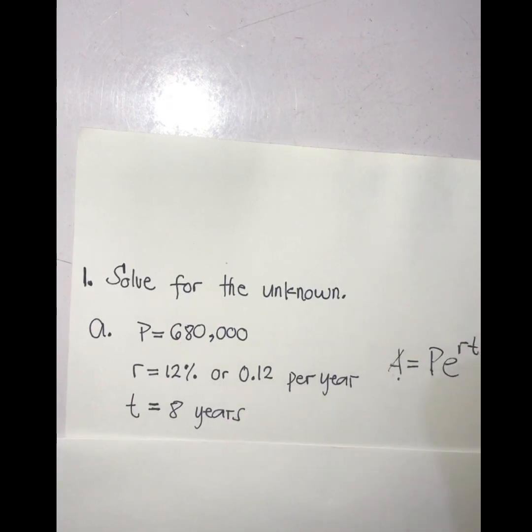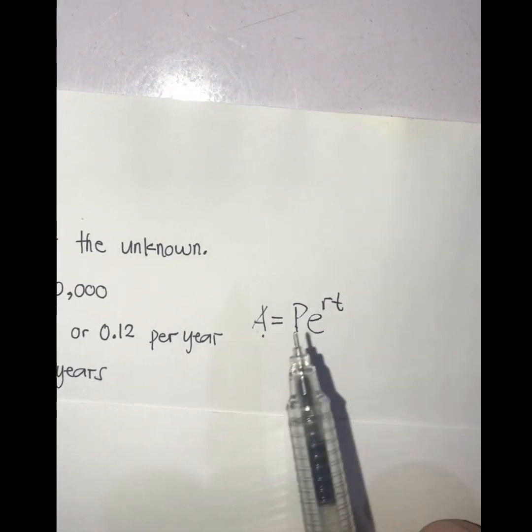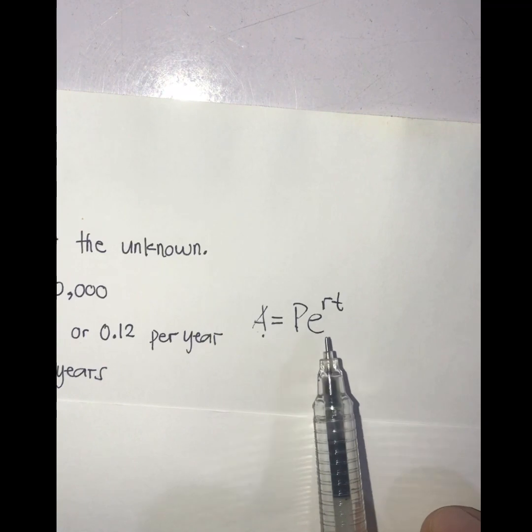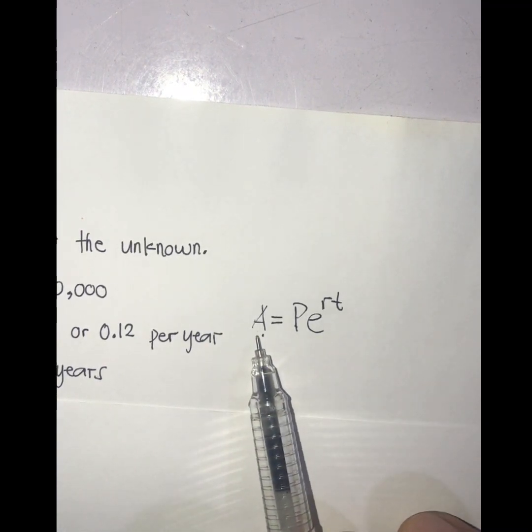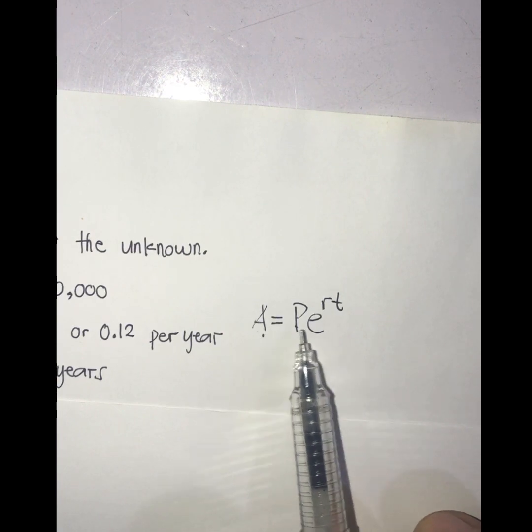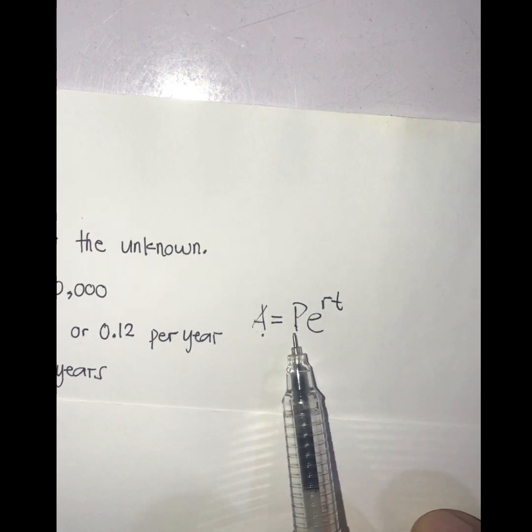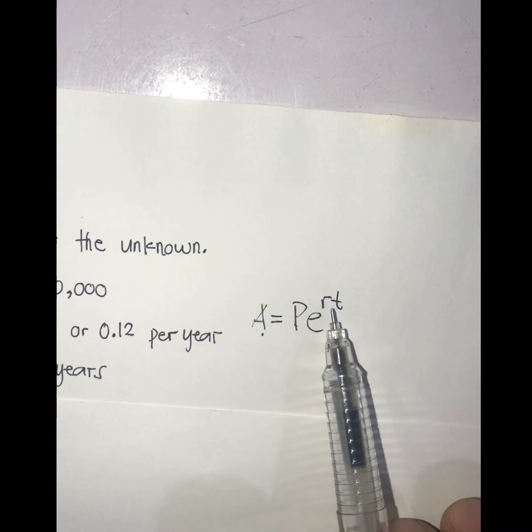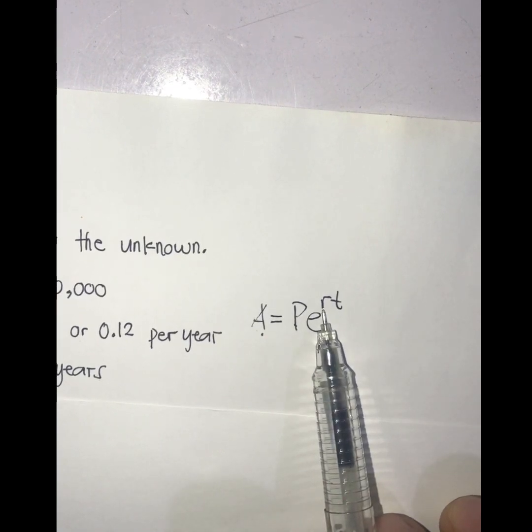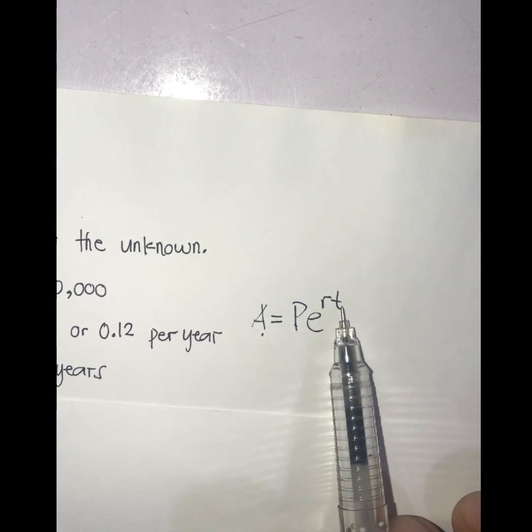The formula here is A equals Pe raised to the power of rt, wherein A is our future population, P is our current population, e is Euler's variable and has an approximate value of 2.718, our exponent r is our rate, and t is our time.